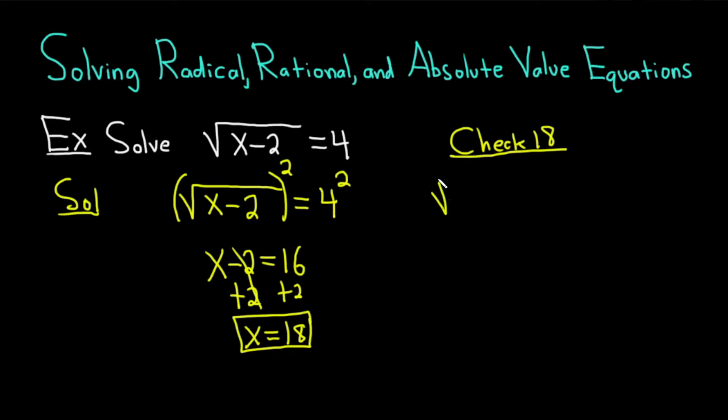So this is the square root of? You just put your answer, in this case 18, in the place of the x. You get 18 minus 2. And this should be equal to 4. So is it? We're going to find out. So 18 minus 2 is 16. So we get the square root of 16. And is that equal to 4? Well, it is, because the square root of 16 is 4. So 4 equals 4, so our answer checks. And so 18 is actually the answer.